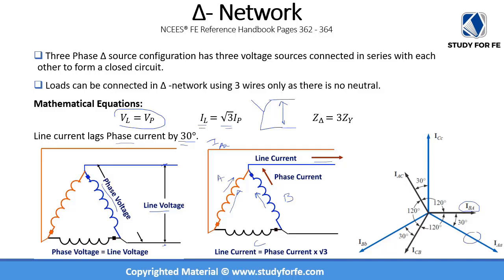It can be confusing to remember the delta and Y-network equations, but when you draw it out it makes perfect sense: the line voltage equals the phase voltage, and the line current is the sum of two phase currents giving a square root of 3 relationship, with the line current lagging the phase current by 30 degrees. By simply connecting the phases in a different way, we arrive at altogether different relationships between voltages and currents.